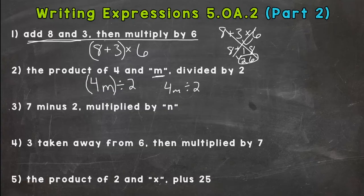So number three, 7 minus 2, multiplied by N. So 7 minus 2, and I want to do that first, so I'm going to put it in parentheses. Multiplied by N. Remember, don't want to use the X whenever you have algebra problems or a letter involved. So I'm going to use the dot to represent multiplication. So (7-2)·N. Always double check, then multiply by N. Perfect.